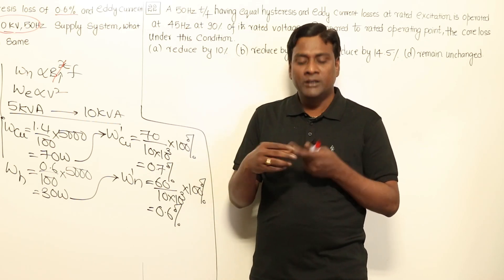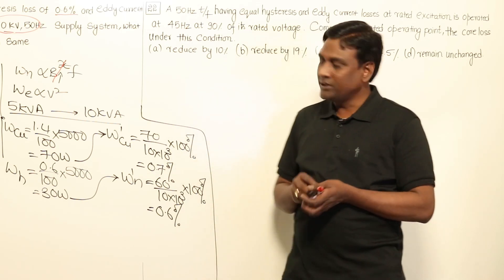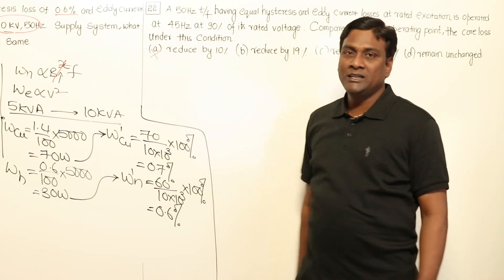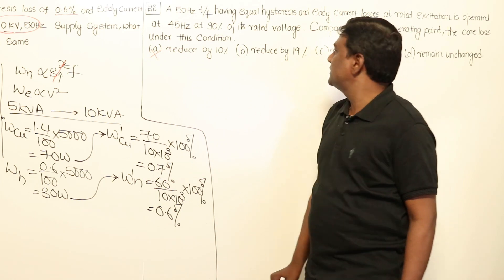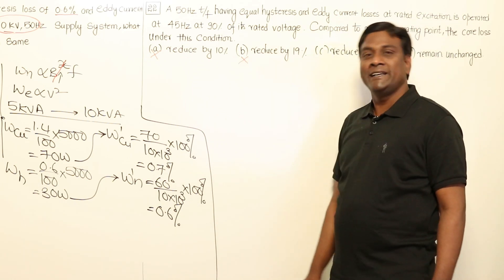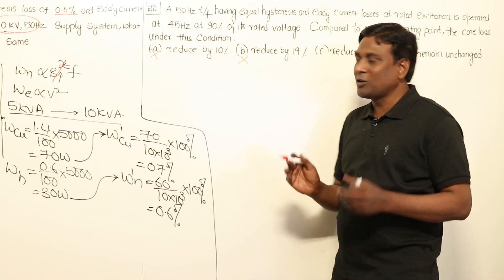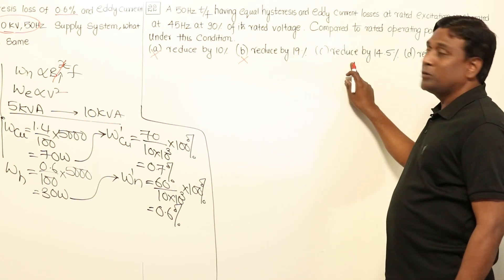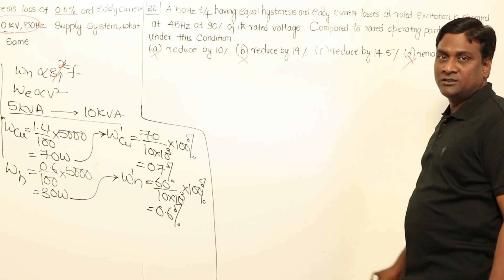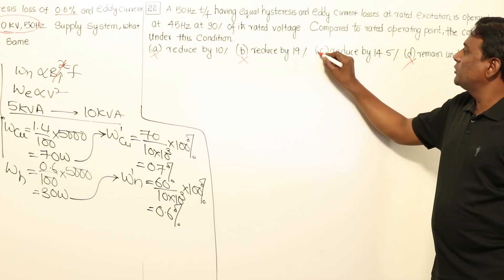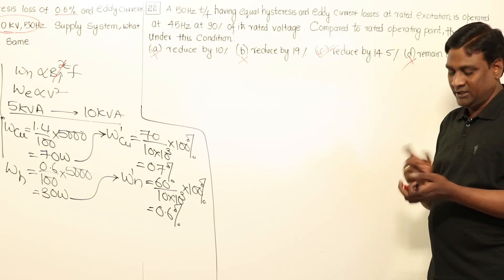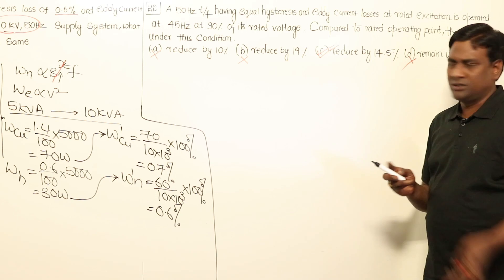So conclusion: 10% reduction in hysteresis loss and 19% reduction in eddy current loss. The combined reduction should be between 10 and 19. The answer 'reduce by 10%' is wrong — that's only hysteresis. 'Reduce by 19%' is wrong — that's only eddy current. 'Remain unchanged' is wrong. So 'reduce by 14.5%' is the correct answer.